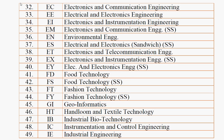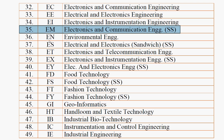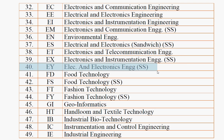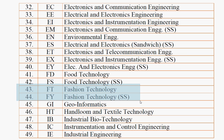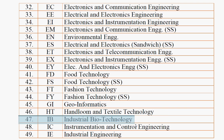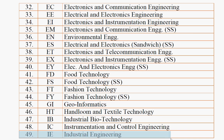32nd: Electronics and Communication Engineering — EC. Electrical and Electronics Engineering — EE. Electronics and Instrumentation Engineering — EI. Electronics and Communication Engineering self-supporting — EM. Environmental Engineering — EN. Electrical and Electronics Engineering sandwich self-supporting — ES. Electronics and Telecommunication Engineering — ET. Electronics and Instrumentation Engineering self-supporting — EX. Electrical and Electronics Engineering self-supporting — EY. Food Technology — FD. Food Technology self-supporting — FS. Fashion Technology — FT. Fashion Technology self-supporting — FY. Geoinformatics — GI. Handloom and Textile Technology — HT. Industrial Biotechnology — IB. Instrumentation and Control Engineering — IC. Industrial Engineering — IE. That gives us 49 courses.